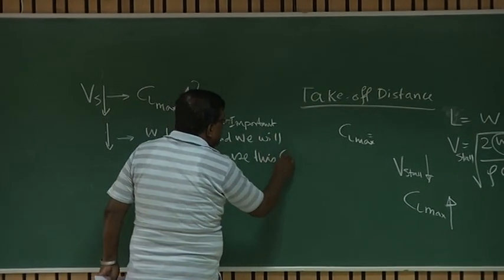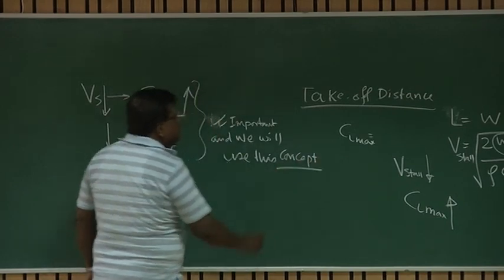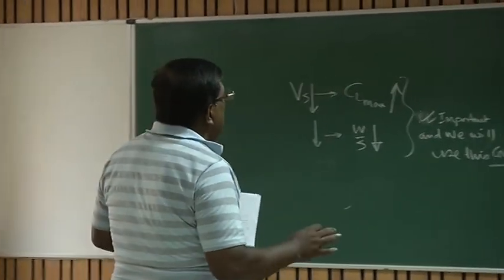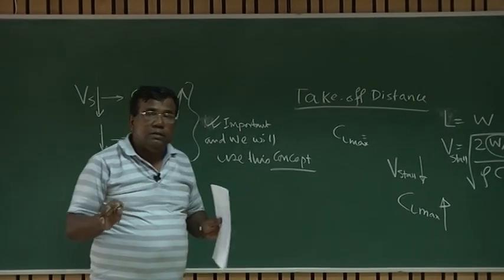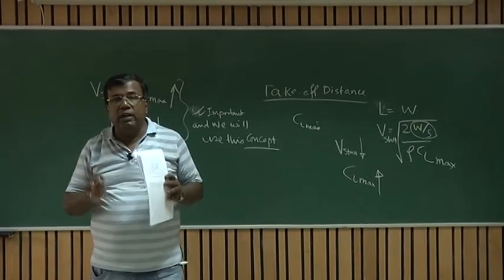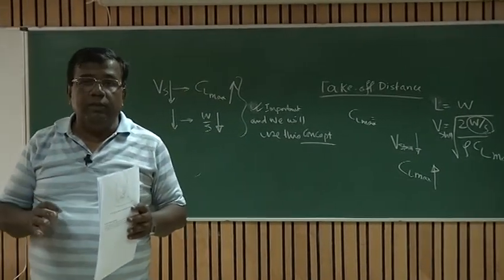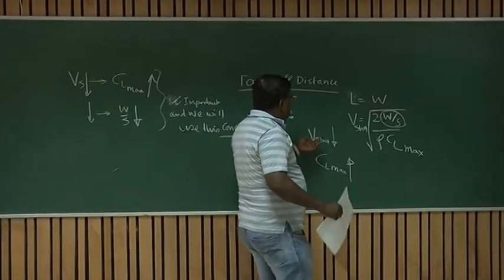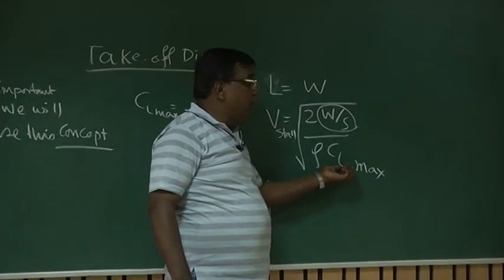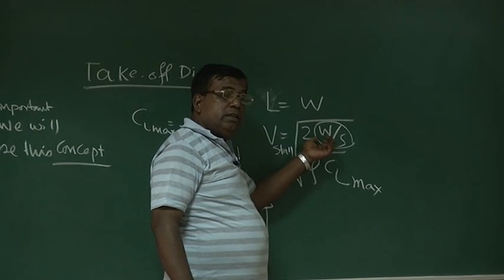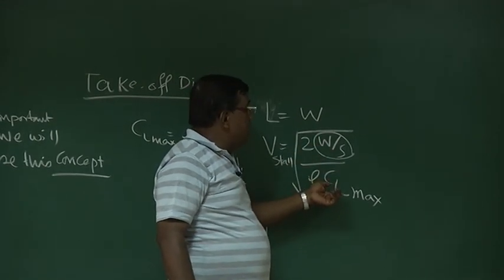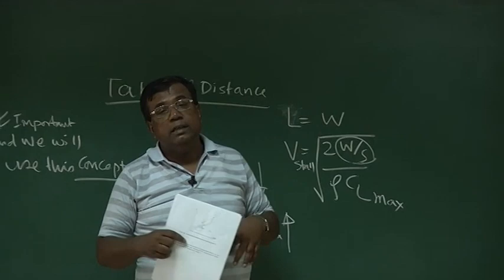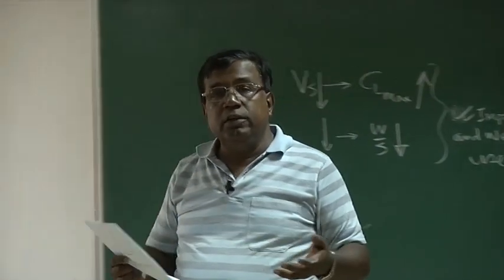Keep this in mind, this is important, and we will use this concept. Let us not lose insight. Please understand again, we want to reduce the takeoff distance. To reduce takeoff distance, we have understood the V stall or the speed at which lift equals weight should be low. To ensure that V stall is low, I have two options. One is, I should increase CL max, or I should decrease W by S, or I do both things - increase CL max and decrease W by S. If I could do that, I will be able to reduce V stall, and immediately you will see that the takeoff distance will reduce.